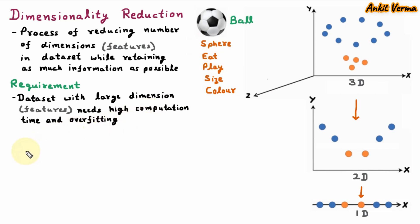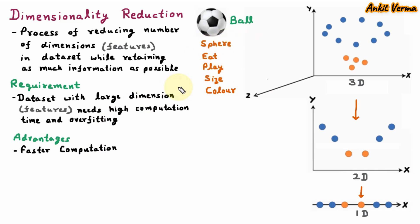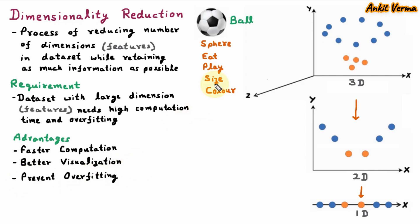There are various advantages of dimensionality reduction. First is faster computation — if we take fewer features, the machine learning model will perform very fast. Next is better visualization — if we have fewer features, we can represent them in a better way. Next is preventing overfitting — taking fewer features will increase the performance of the model.